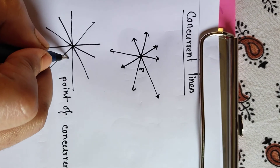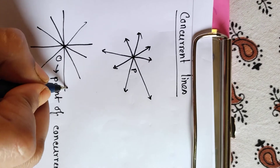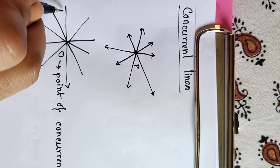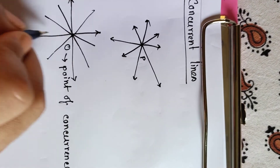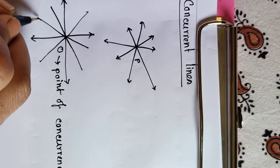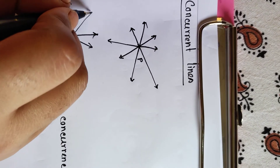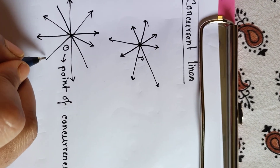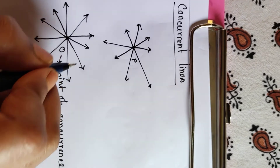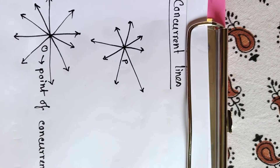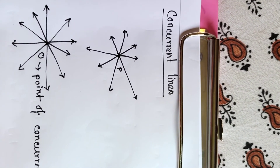This point O will be called the point of concurrence, and all these lines — there are five lines — will all be called concurrent lines.